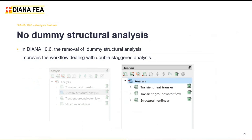For staggered analysis — specifically double staggered analysis — in Diana 10.6 the user no longer needs to define a dummy structural analysis in the analysis setup. Previously, between two flow analyses (e.g., transient heat transfer and transient groundwater flow), a dummy structural analysis was required for Diana to set up matrices and store transient information. Now in Diana 10.6 the analysis is set up without that dummy structural analysis, making the setup of double staggered analysis much easier.